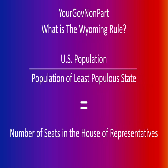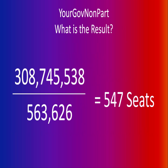The Wyoming Rule very simply says: after the decennial census, take the total U.S. population, divide it by the population of the least populous state — which has historically been Wyoming, hence the name — and that determines how many seats are in the House of Representatives. Not a fixed number of 435, but what would mathematically result in a new number of 547 seats — an additional 112 seats.